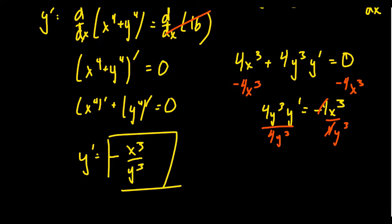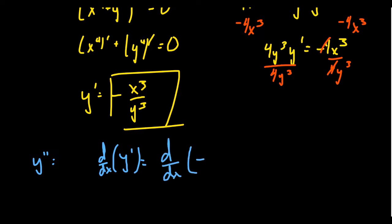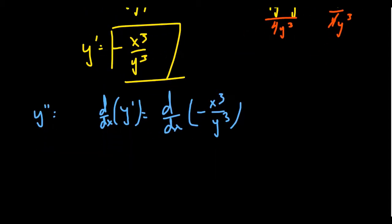That's not the final answer though — we're looking for y double prime. To find the second derivative, we take the derivative of the derivative. On the left-hand side, we take d/dx of y prime, which gives y double prime. On the right-hand side, we take the derivative of negative x cubed over y cubed. We can calculate this derivative implicitly as well.